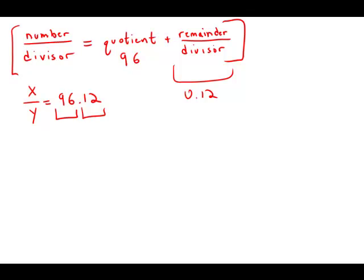So here, that 0.12 equals the remainder, 9, over the divisor, y.